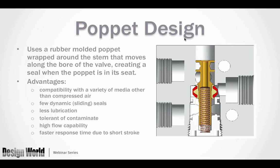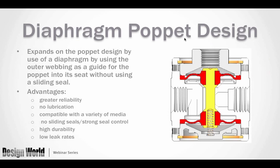A variation on the poppet is the diaphragm poppet design, which adds a diaphragm to help hold the poppet in the proper position via webbing. It's a very reliable type of valve that doesn't require lubricant because there are no sliding seals. It's capable of handling many different media, depending on the seal and diaphragm materials. It's a very durable valve with typically very low leakage, and often provides isolation between the media and the actuator, whether air-piloted or electrically actuated.